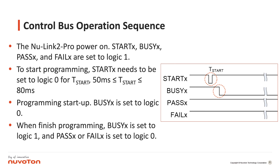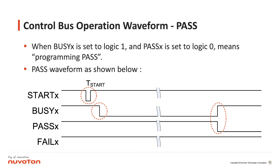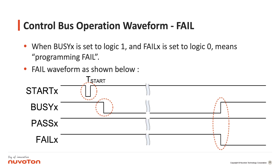When the programming starts, BZ is set to logic 0. When the programming is finished, BZ is set to logic 1. The Pass and Fail signals are set to logic 0 depending on the programming result. When Fail is set to logic 0 it means programming passed. When Busy is set to logic 1 and Fail is set to logic 0, it means programming failed.